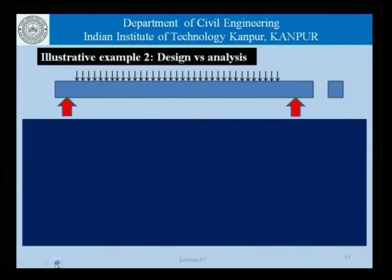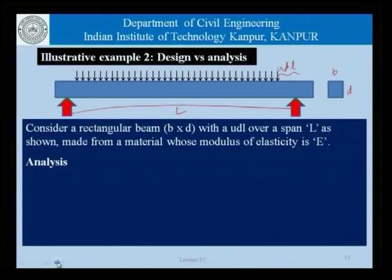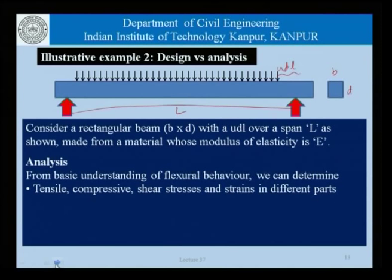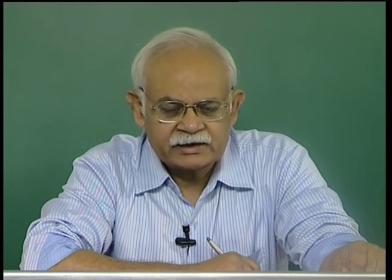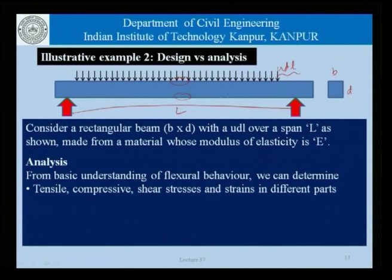Consider another example: a simply supported beam with cross section B × D and a uniformly distributed load over span L, with modulus of elasticity E. Analysis means that from the flexural behavior of the beam we determine the tensile, compressive, and shear stresses and strains in different parts of the beam. We can draw the bending moment diagram and from it get stresses and strains at the bottom fiber, top fiber, center of the beam, near the support, and so on.